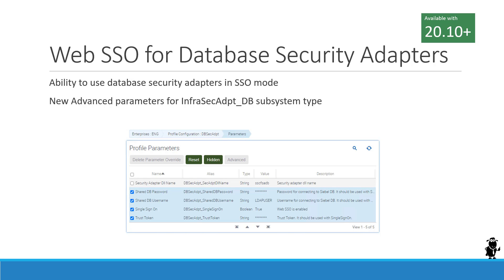You have a trust token and a shared database username and password. That username and password are used to connect to the database to verify the user that actually logs in. The trust token, as we can read from the documentation, is the token that will be compared to whatever is submitted by the application interface profile. The AI profile needs to be set up for web single sign-on as well, and the same trust token must be entered there.